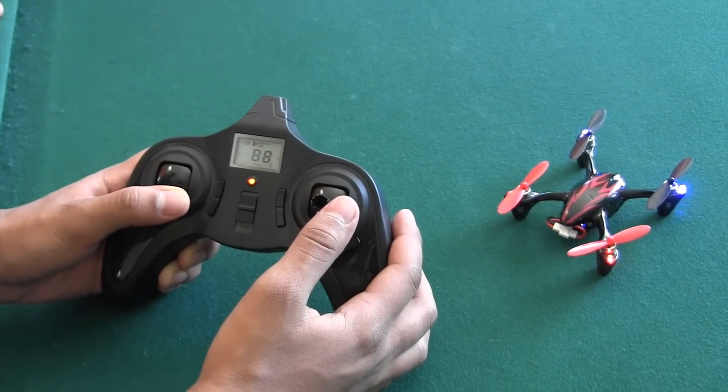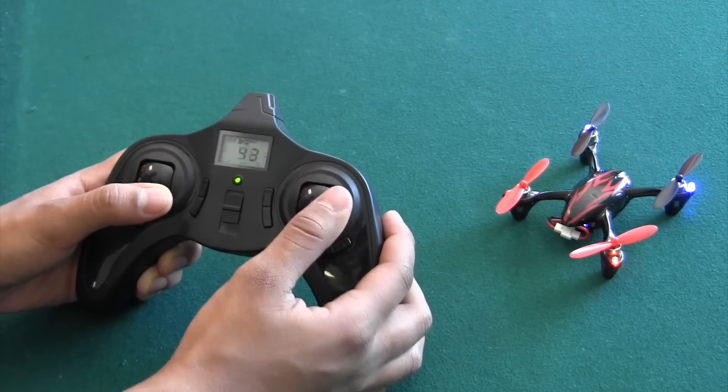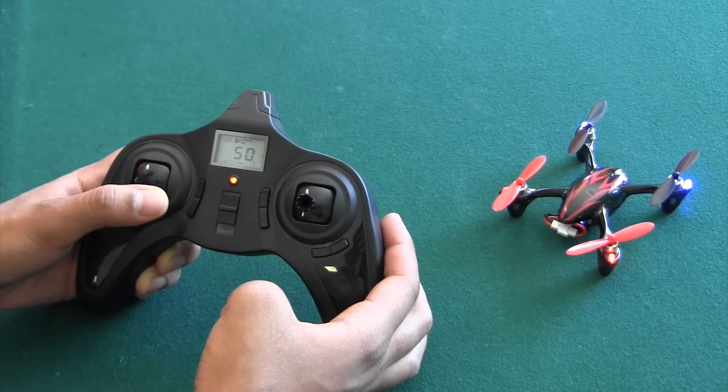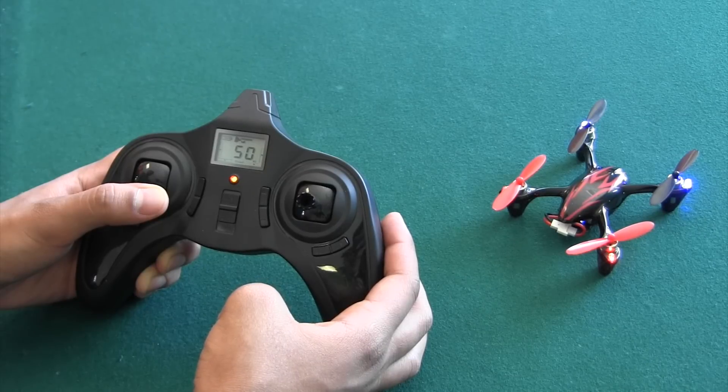While holding the left stick down and to the right, move the right stick horizontally back and forth until the lights on the quadcopter blink. This indicates a successful calibration.